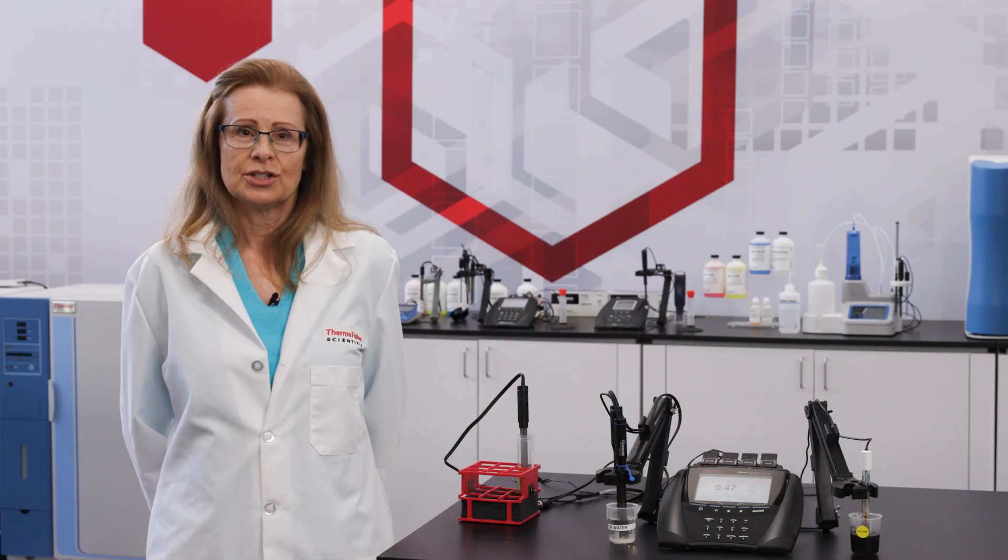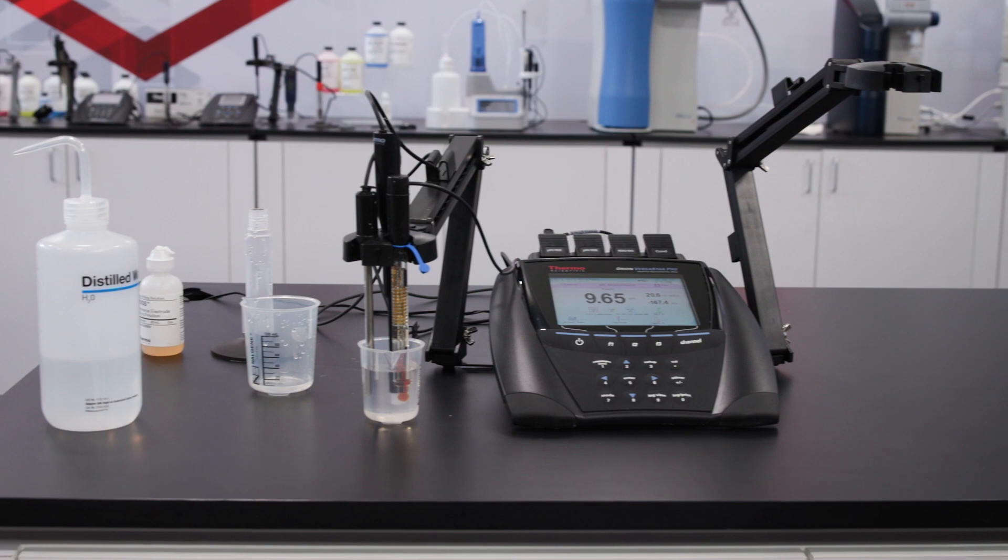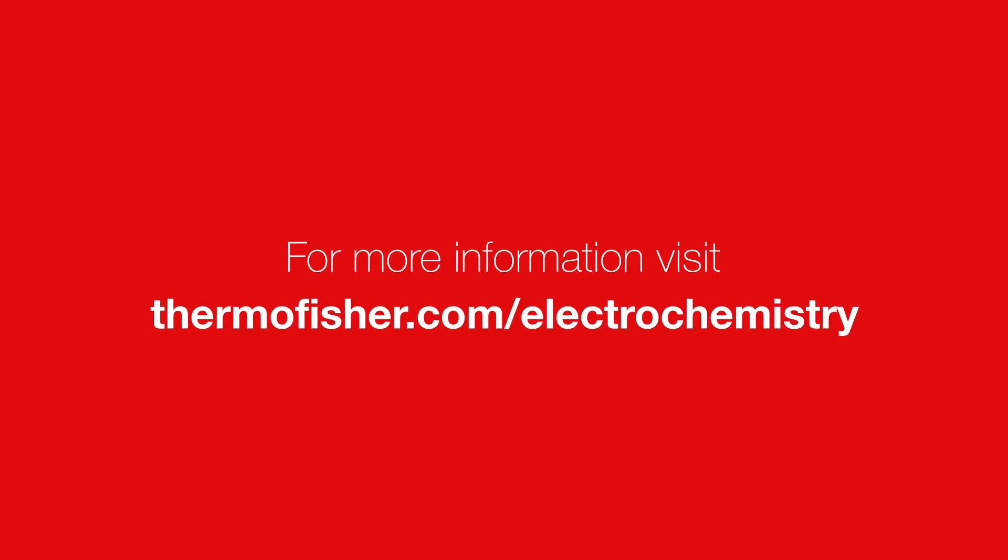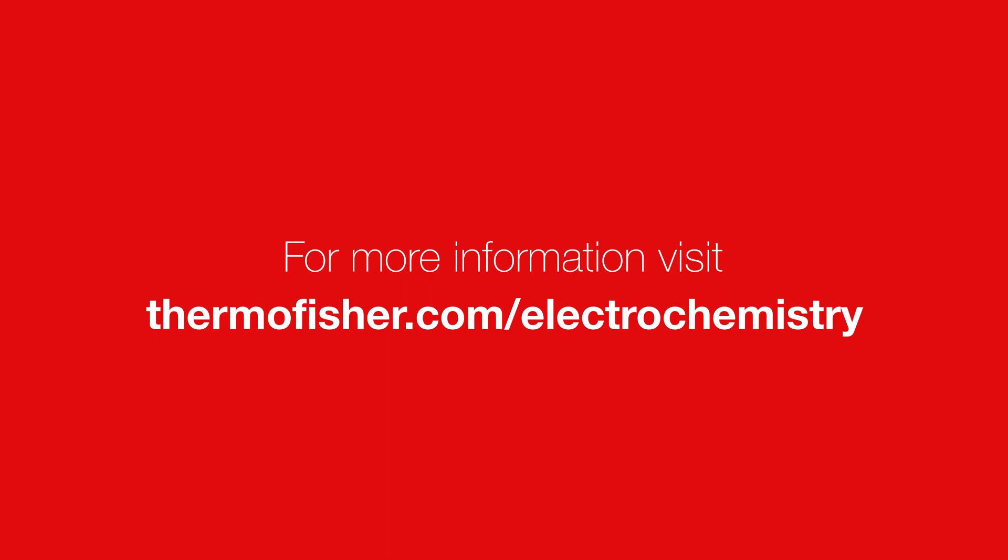Thank you for watching. We hope you found this video helpful. When we take the proper pit stops to care for our electrode, it will take care of us. For accurate results in pH measurement and testing, you can rely on Thermo Scientific Orion pH electrodes. To learn more, visit thermofisher.com/electrochemistry.